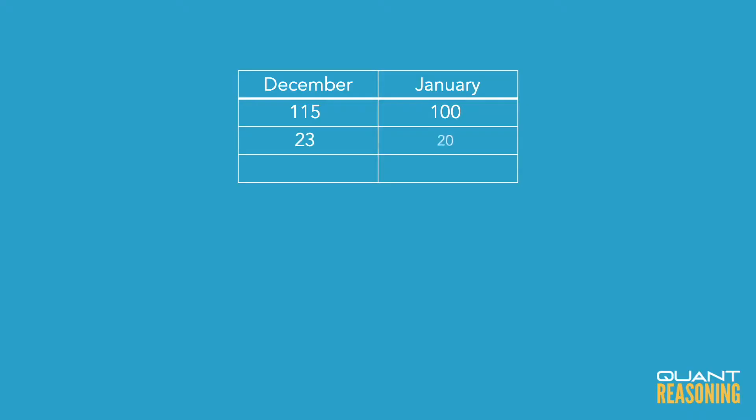And now we can reduce this ratio to the smallest integers that fit. They do have a common factor of 5, so we'll call this 23 to 20. So December to January is 23 to 20.